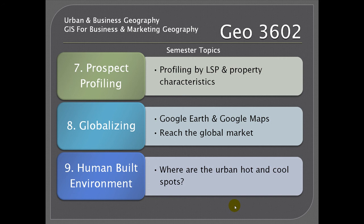Topic eight is globalization. We'll learn how to get information onto Google Earth and Google Maps, and thereby reach the global market. And nine is the human built environment — to identify where the hot spots are and where the cool spots are, where the investment opportunities are great, and where the risk might be greater than the benefits received from the investment.